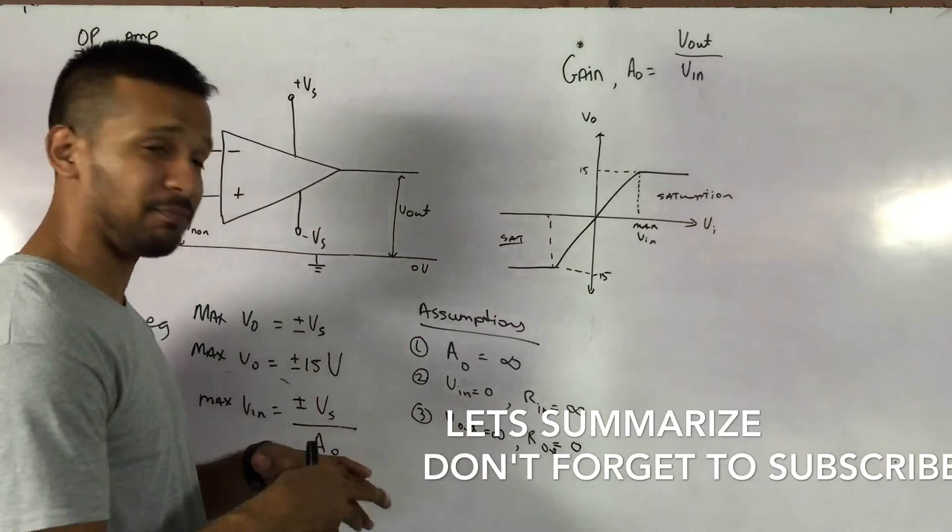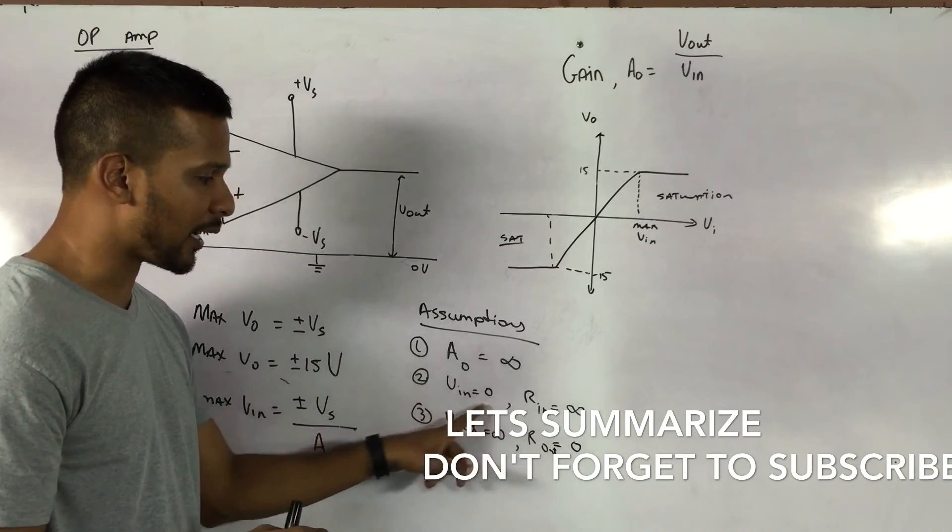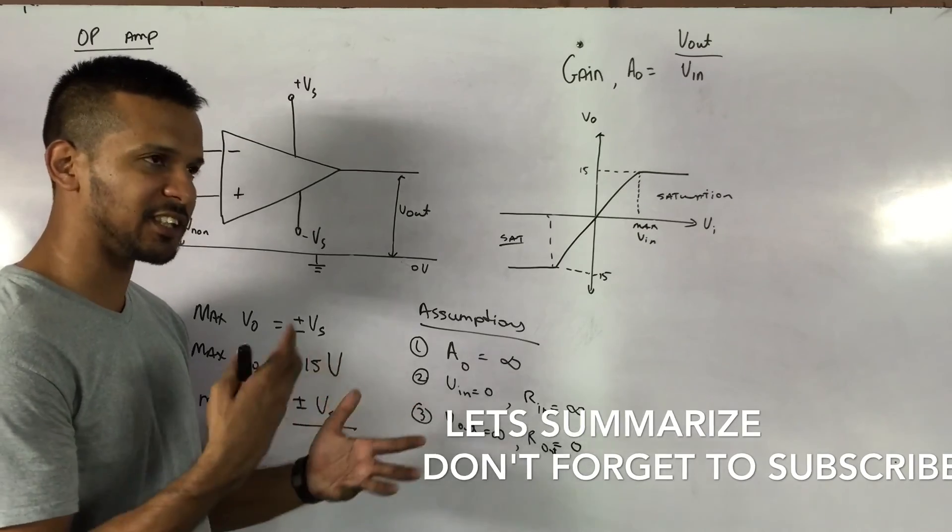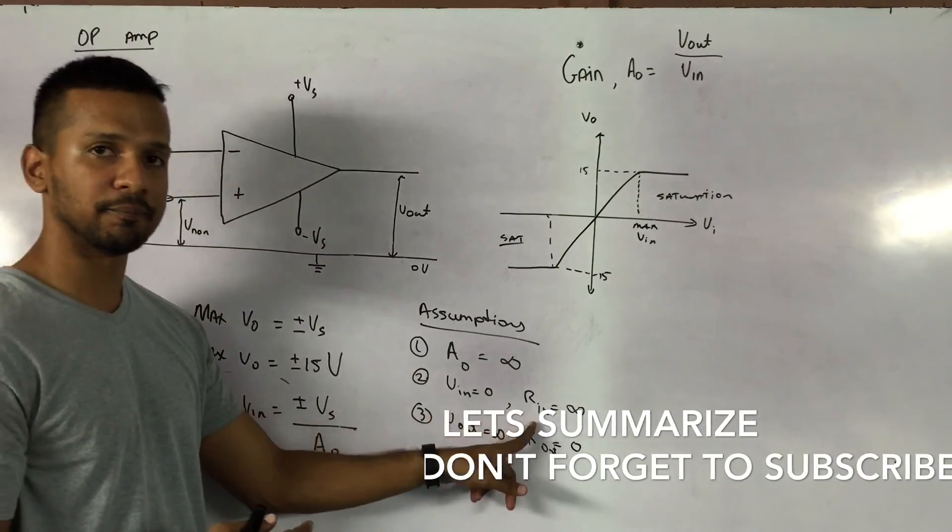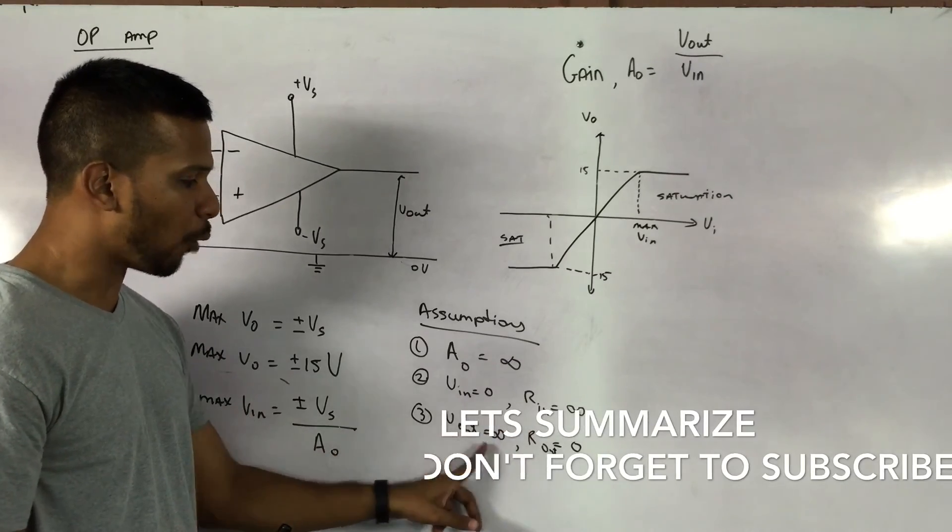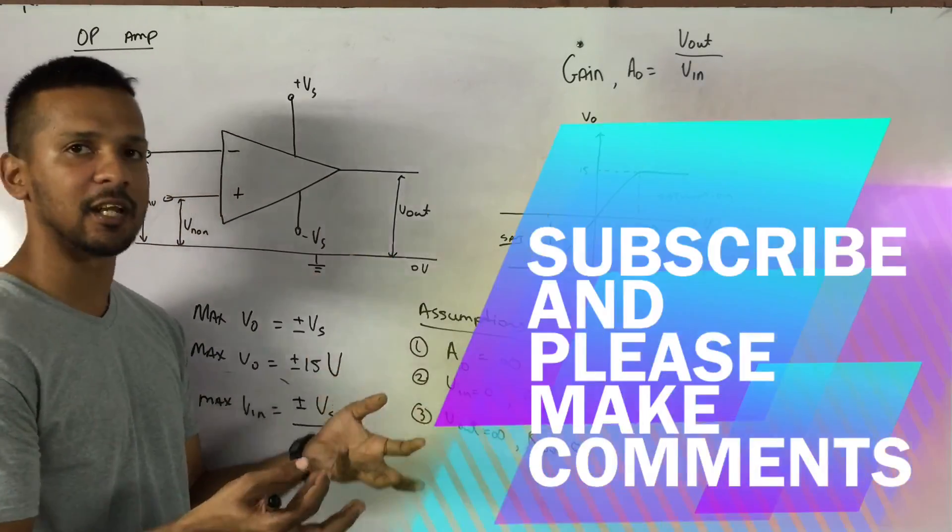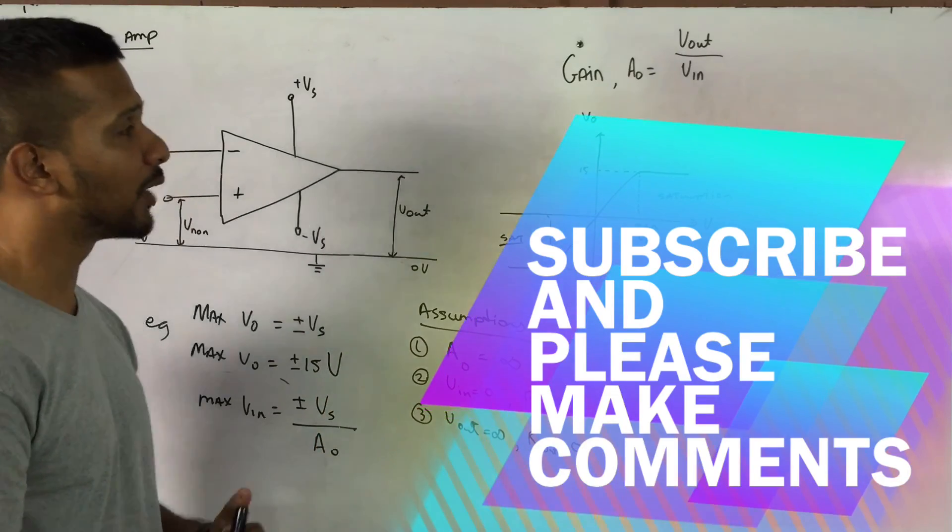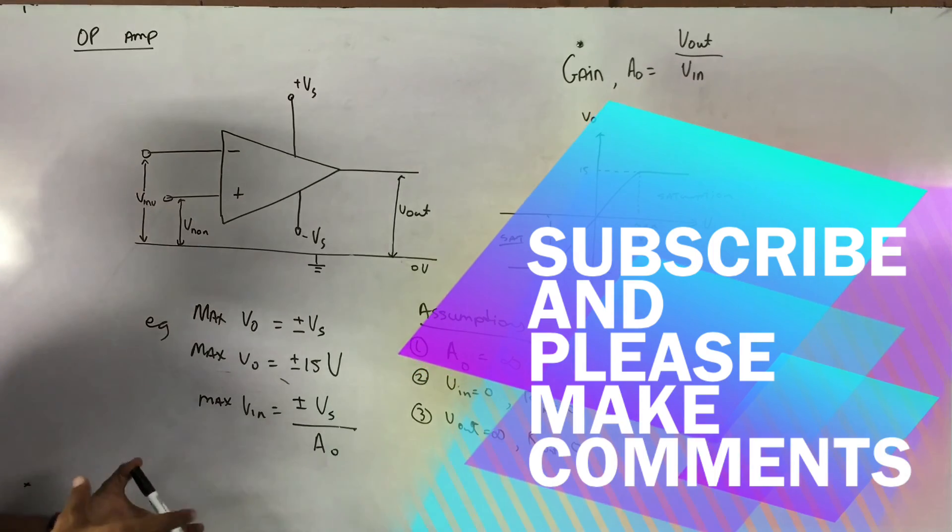Ideally, we want an op-amp that gives us a gain of infinity. We want an input that's almost zero. So to achieve that, we must have a resistance or an impedance here of infinity. Also, the output must be very large or infinity, and to achieve that, the resistance here is zero. So here we have a simple introduction to what op-amp is about.